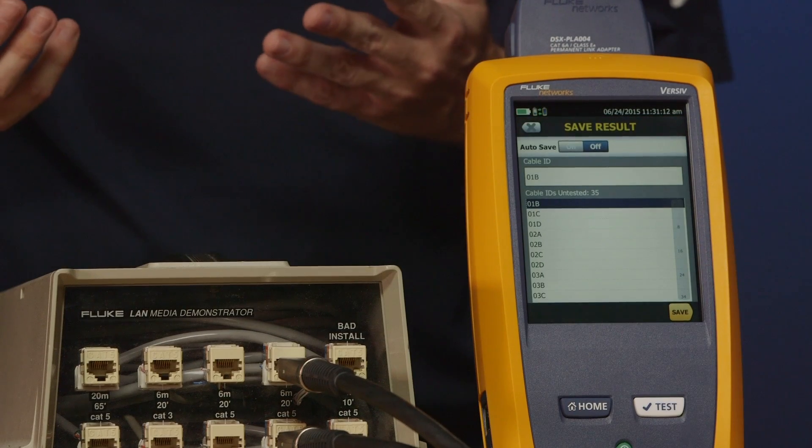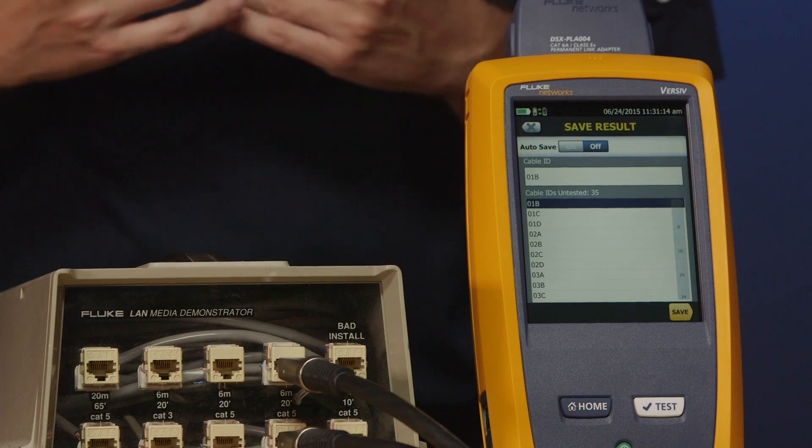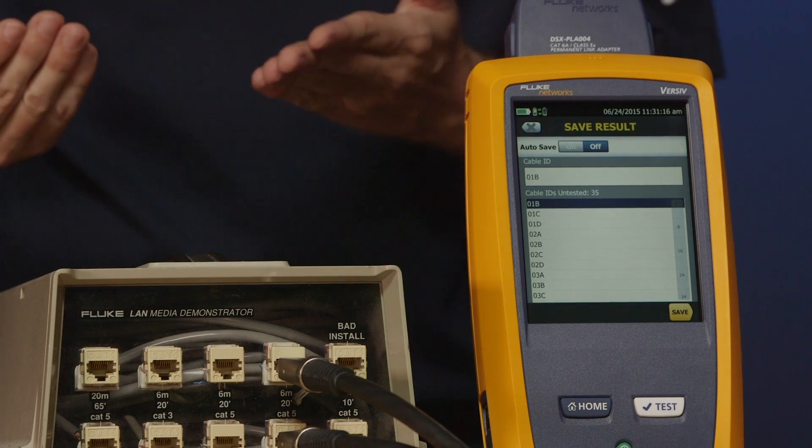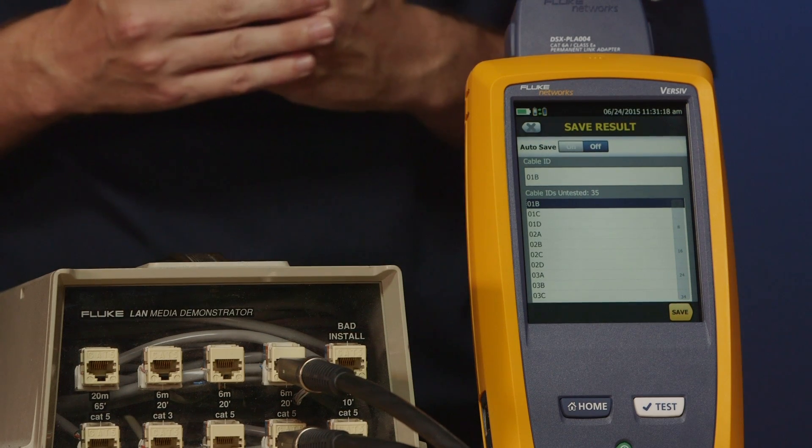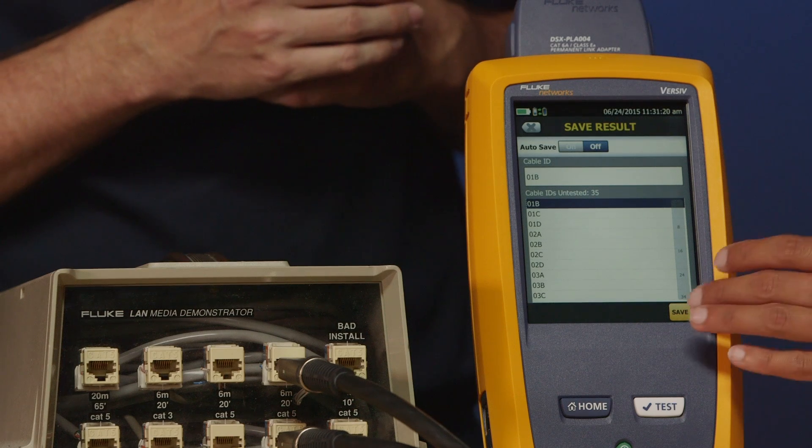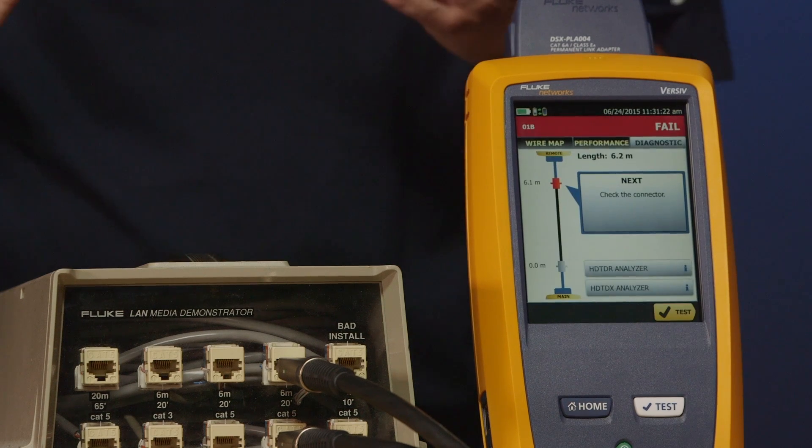So go ahead and tap fix later. That brings up our cable ID selection here. You'll notice that 01A is missing because we've already tested that. It's jumped to 01B. Just go ahead and hit save. And you are good to go.